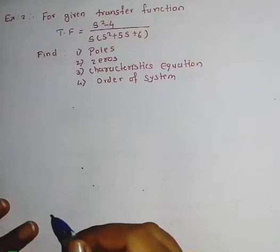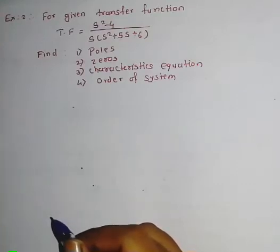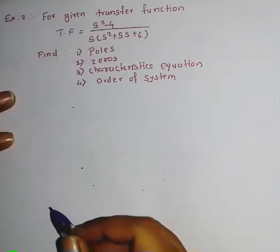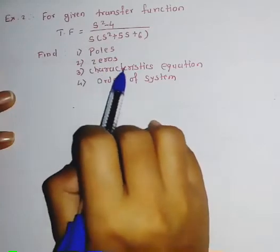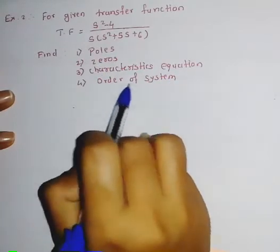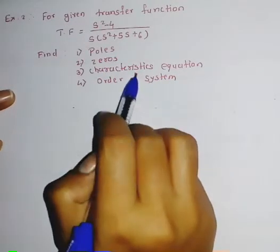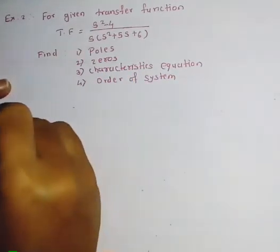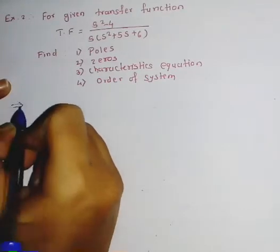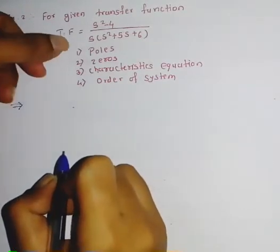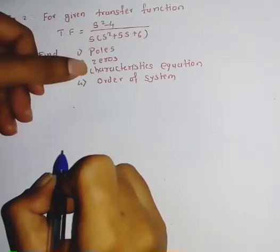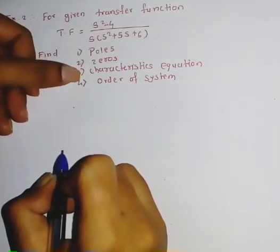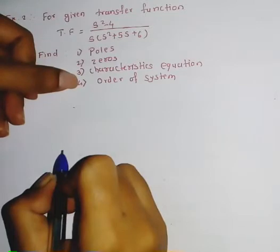Hello students, today we see the second problem which is based on poles and zeros of the transfer function. We have to find out poles, zeros, characteristic equation, and order of the system. In the previous problem we already saw the first three parameters — poles, zeros, and characteristic equation — so order of system is the new one here.